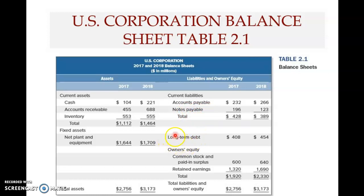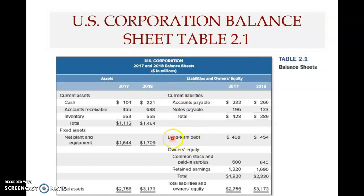Moving on to longer-term debt: long-term debt by definition means the debt's maturity needs to be repaid after one year, not within the next year. For example, if the year is 2018, this debt becomes due in 2020 — not 2019, because if it were 2019 it would be short-term debt. Here we see 454 million dollars of long-term debt owed by US Corporation to its long-term creditors, which could include banks that have lent capital to the company. Total liabilities equals current liabilities plus long-term debt.